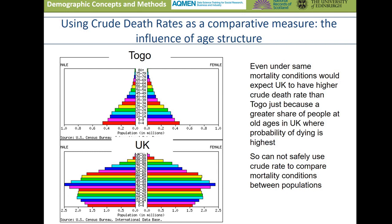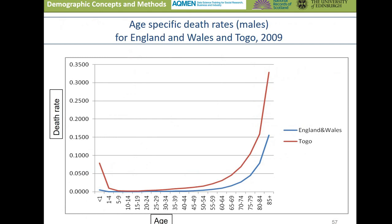We can see the differences in population structures in these two population pyramids. In the UK we have a far greater proportion of the population at older ages where the mortality risk is highest. So it would be unwise to compare crude death rates in these two contexts. Looking at the age-specific mortality rates in England and Wales and Togo, we can see that indeed the rates are much higher in Togo, including a particularly high level of mortality in the first year of life in Togo compared to England and Wales, which is a feature of less wealthy countries with less developed health, maternity services, and sanitation.